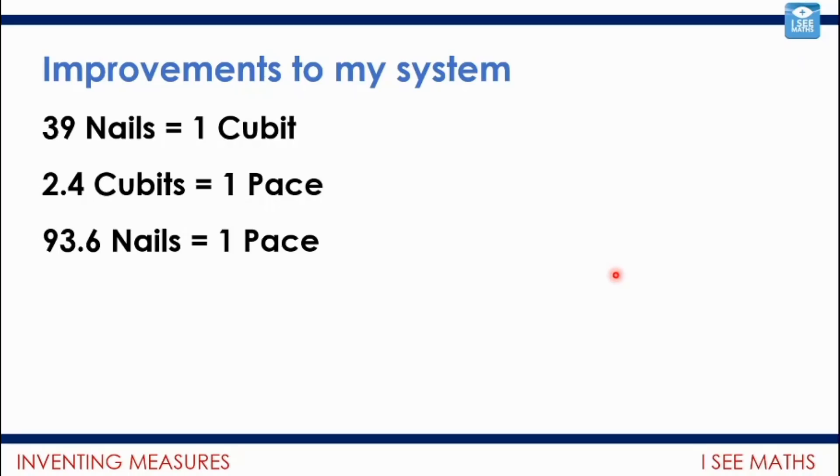Let me tell you another thing that's slightly less than ideal about my system. It's very difficult to convert between my units because when one pace is 2.4 cubits, well, it would be much easier if it was three cubits to one pace or five or even ten, or 39 nails to one cubit. If I have to work out, well, seven cubits will be how many nails. It's quite a difficult calculation. So that's another thing. If I was designing a system, I would want the conversions to be quite straightforward calculations to do.